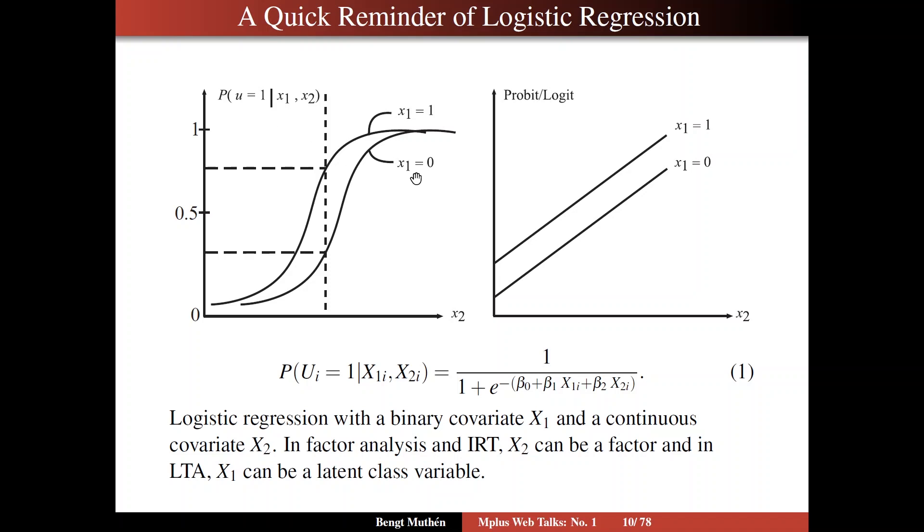And also, we have a categorical binary x1 covariate, a dummy variable, which could be smoker versus non-smoker. And we see that with increasing h, the probability of getting lung cancer increases, but we also see that for a given h, the probability of getting lung cancer is higher for those who are smokers than for those who are not smokers, 0.75 versus 0.25 in this case.